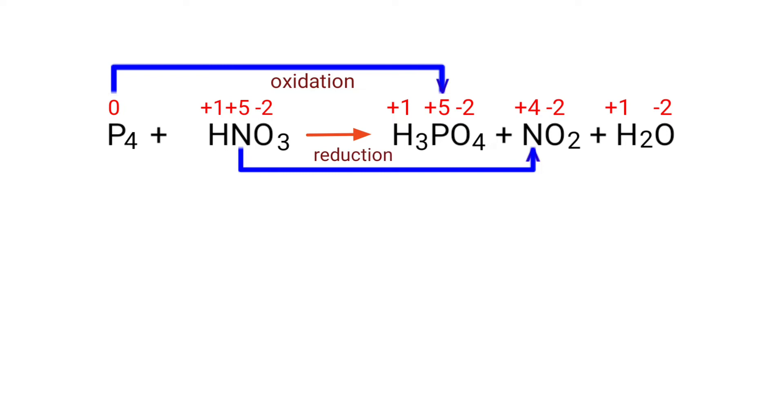In the oxidation state, the oxidation number increased by plus 5. In the reduction state, the oxidation number decreased by minus 1. In the P4 element, there are 4 phosphorus atoms present, so total increase in the oxidation number is plus 20.